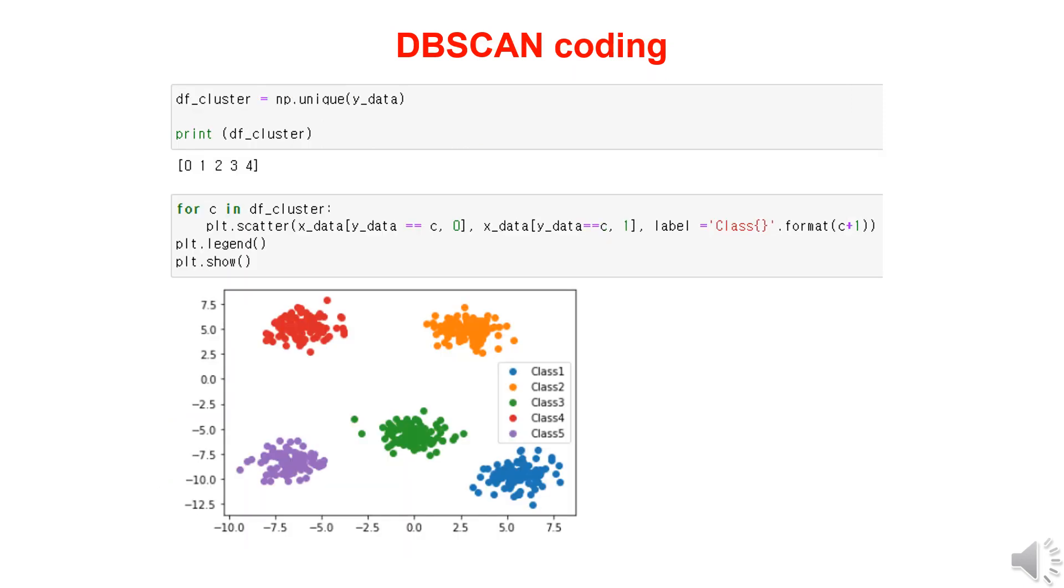By using the unique command provided by the numpy library, we can remove duplicate values and display those unique values. The Y data contains a total of 5 values, 0, 1, 2, 3, and 4, representing the 5 clusters.